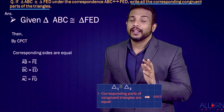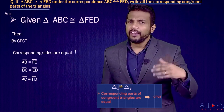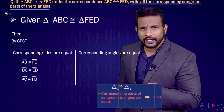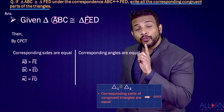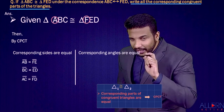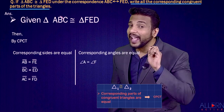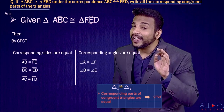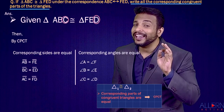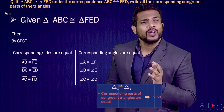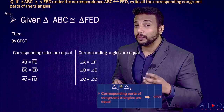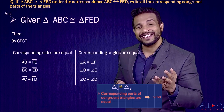Now the corresponding angles — equally straightforward. Angle A corresponds to angle F, so angle A equals angle F. Angle B equals angle E, and angle C equals angle D. And that's what we got. Wasn't that easy? We've written down all the corresponding congruent parts — three pairs of sides and three pairs of angles.